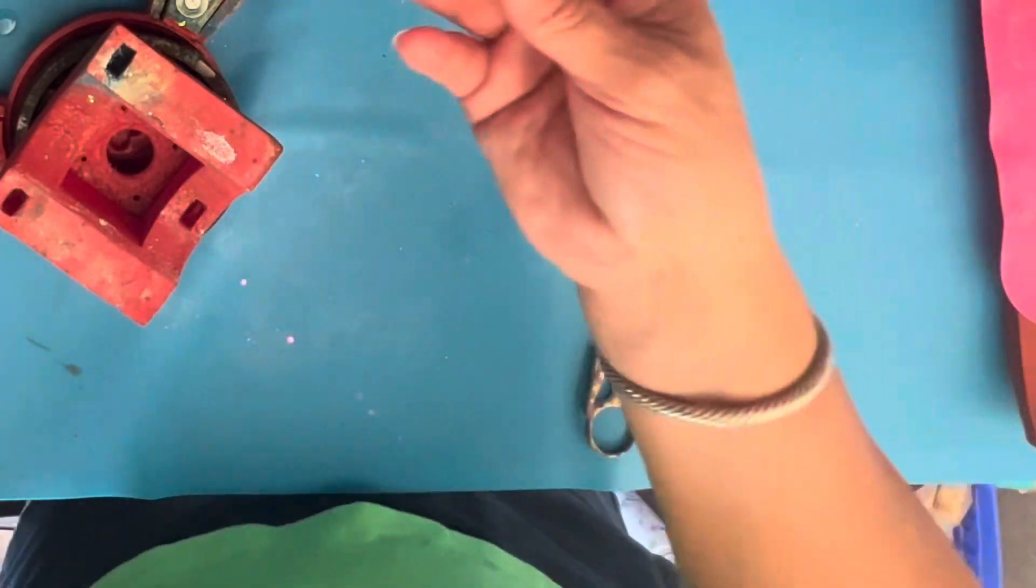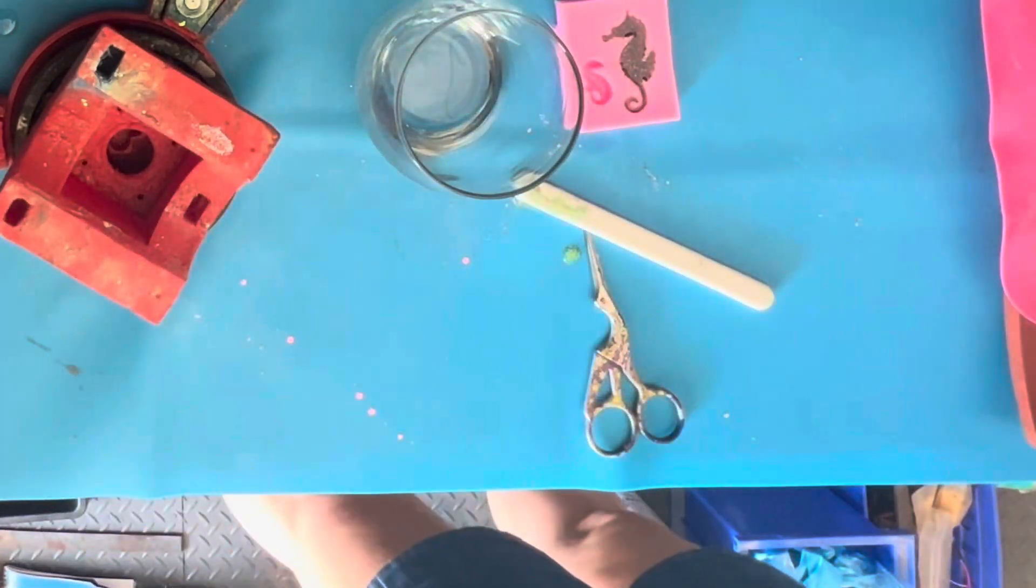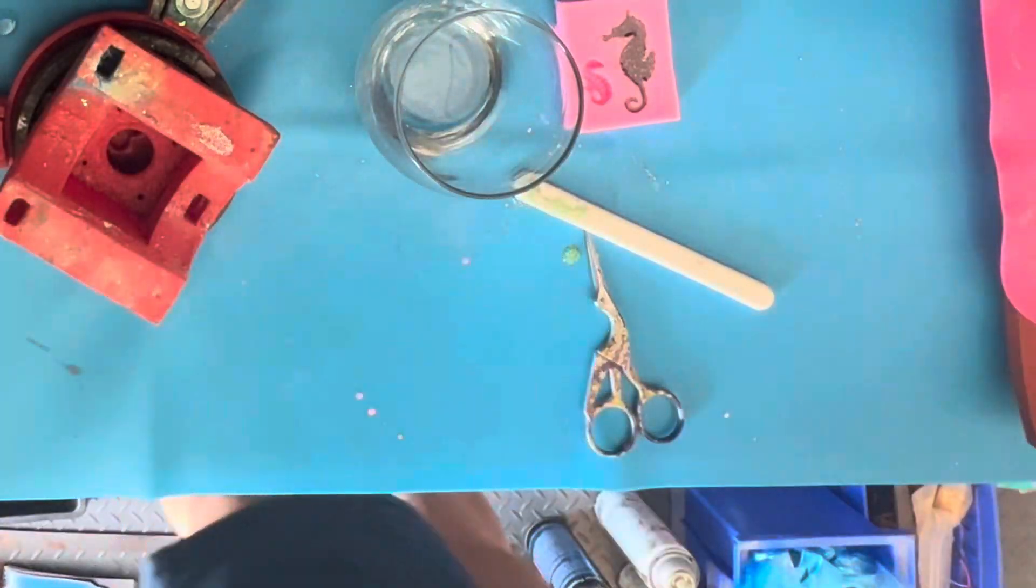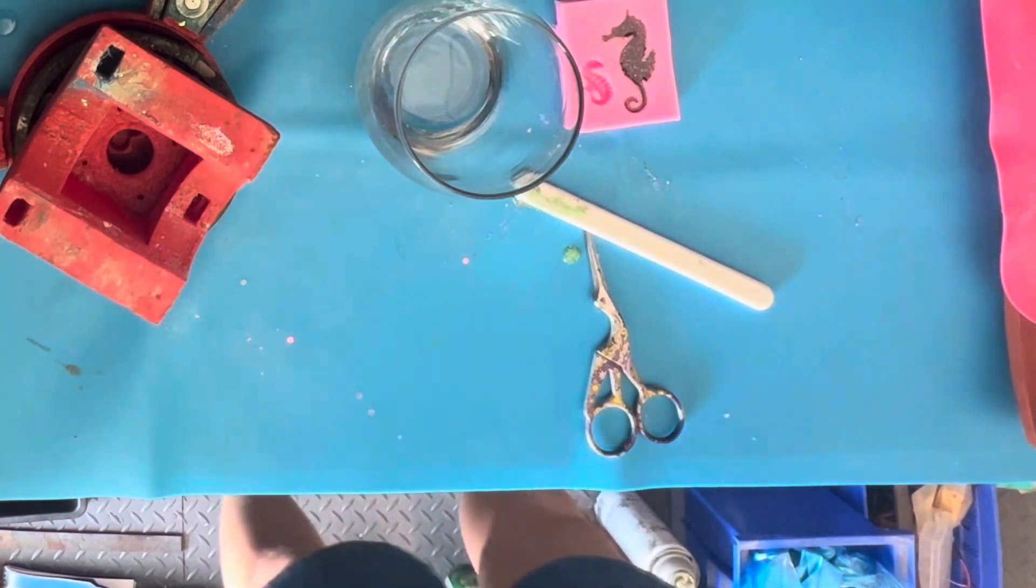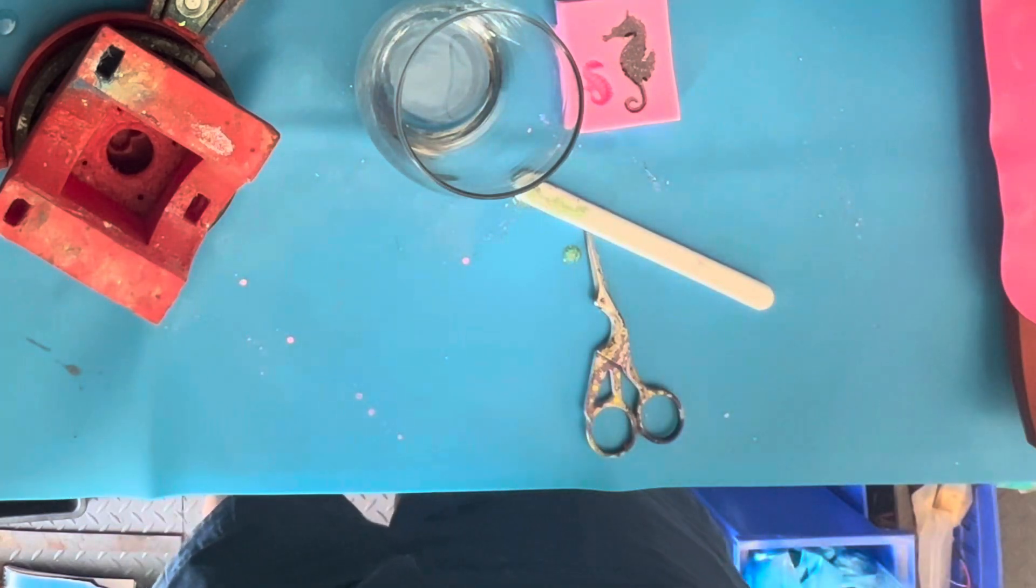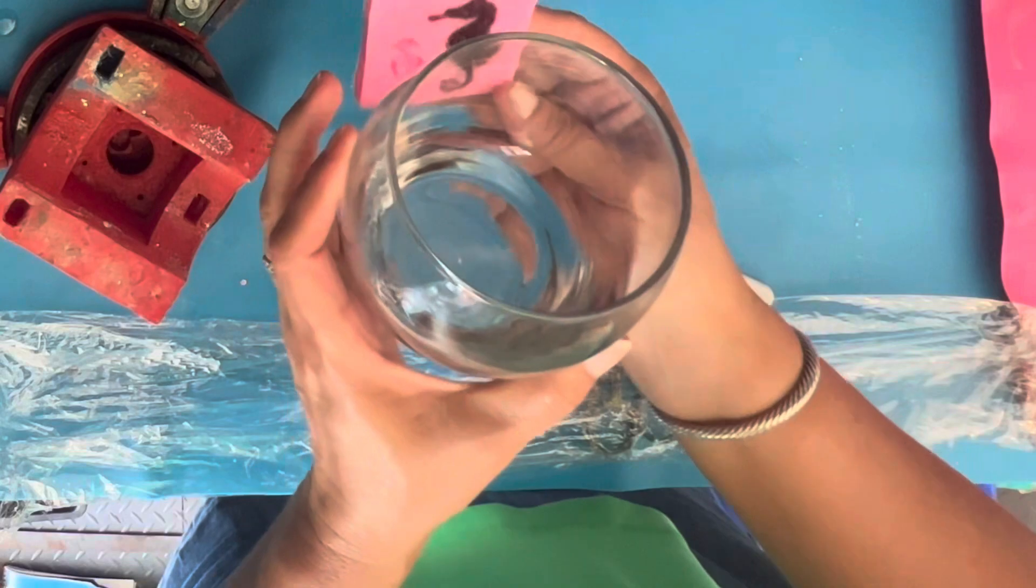All right, so now this has set and it is sticky. So it's not cured, it's just sticky. It's not going to run, but it's going to stick. So I like to use saran wrap with this. And you can use generic saran wrap, whatever, but plastic wrap. I take a piece off and then I'm going to take my molds and I'm going to put it on my glass.